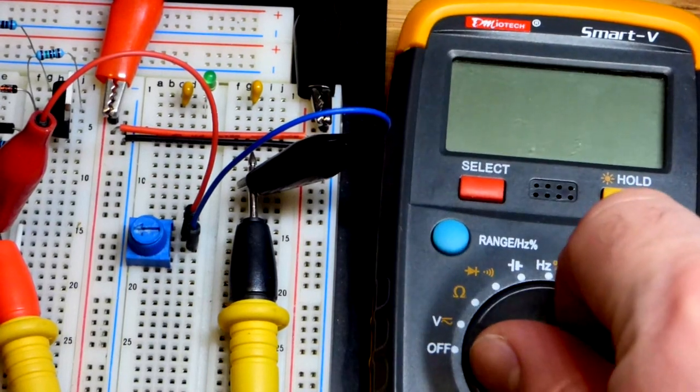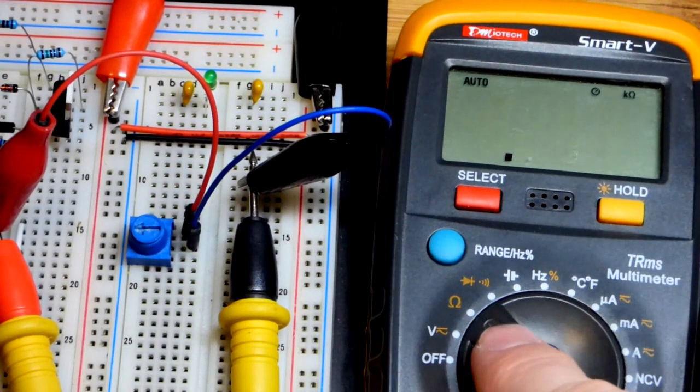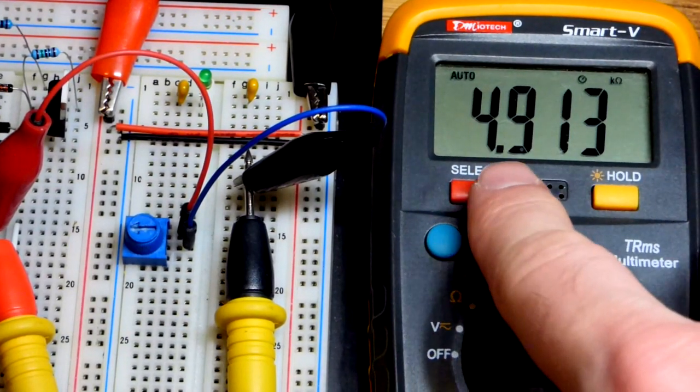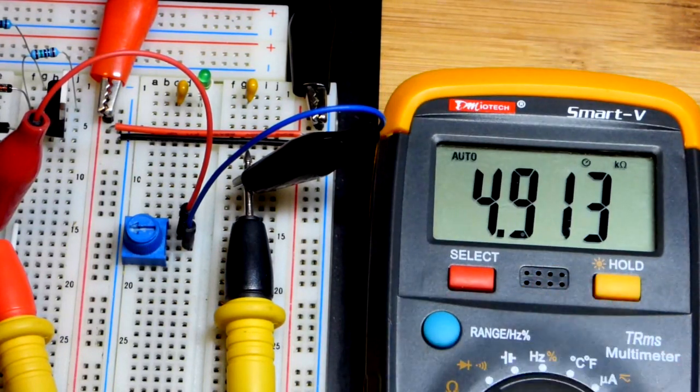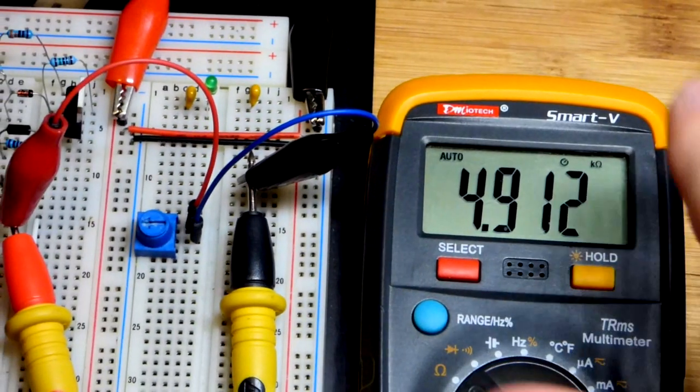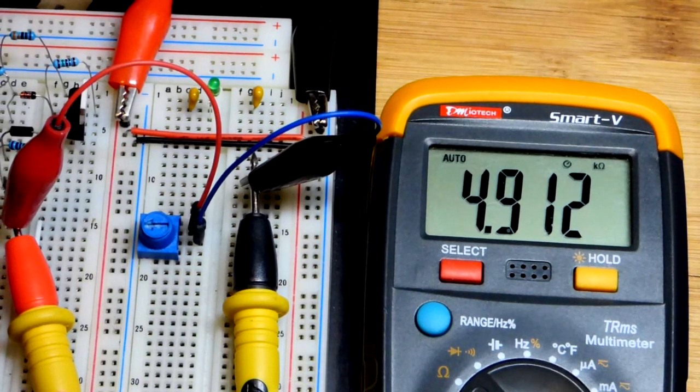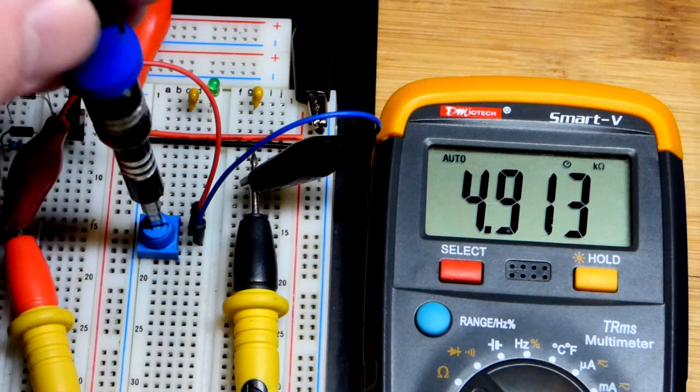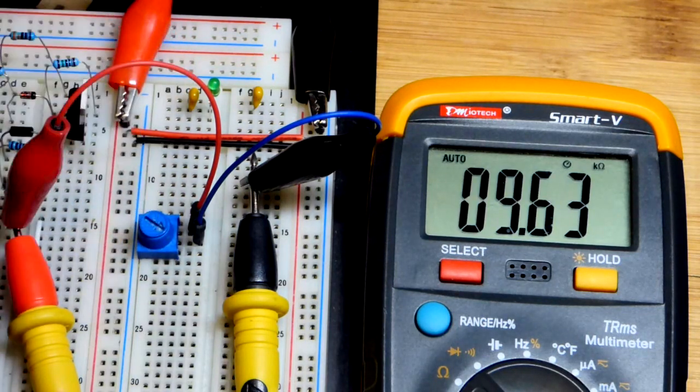We go to the resistance setting right there and you can see about halfway we're about five kilo ohms right there. So this is kilo ohm at the top there. As I said before, this is rated for 10 kilo ohms but it's probably going to be off a bit.